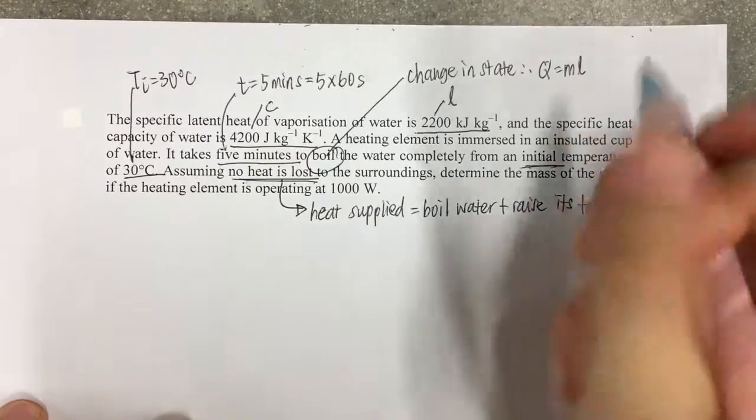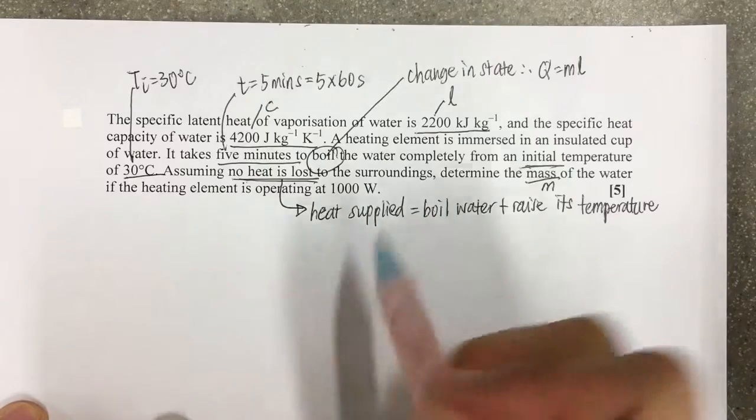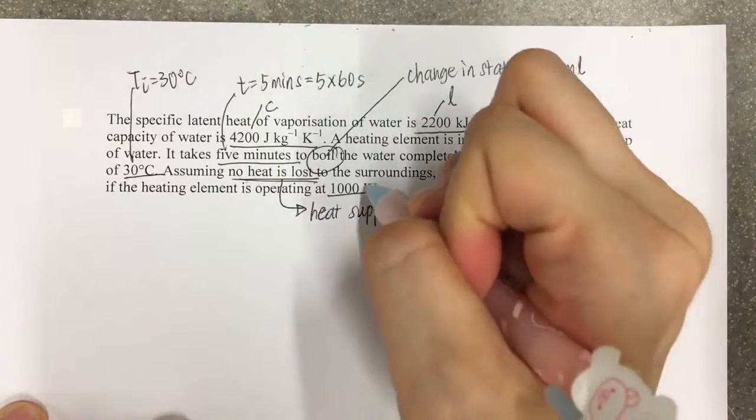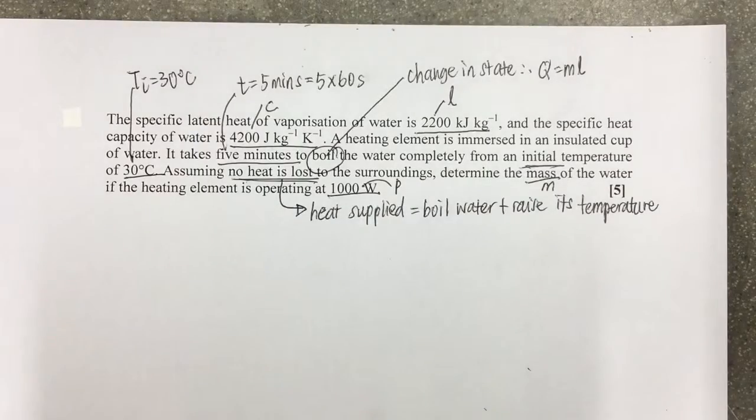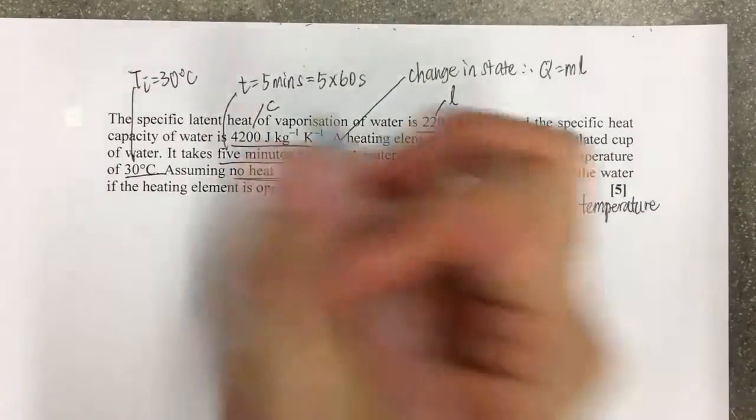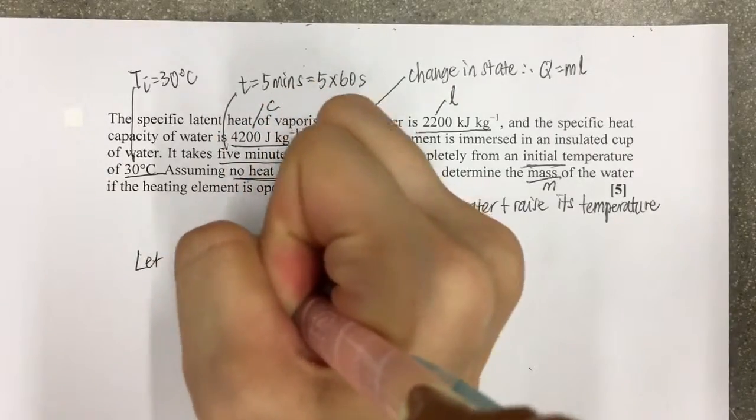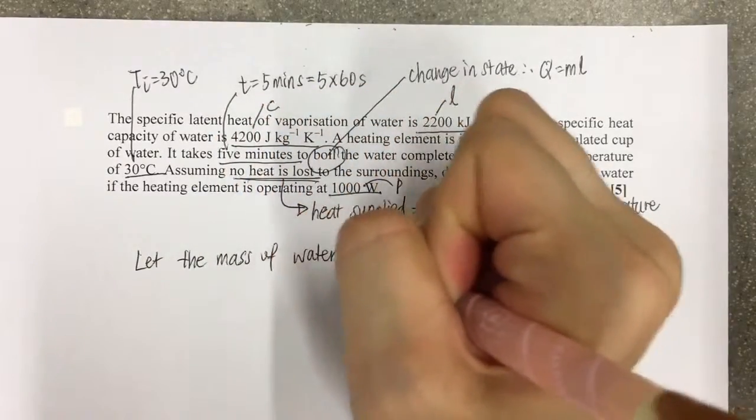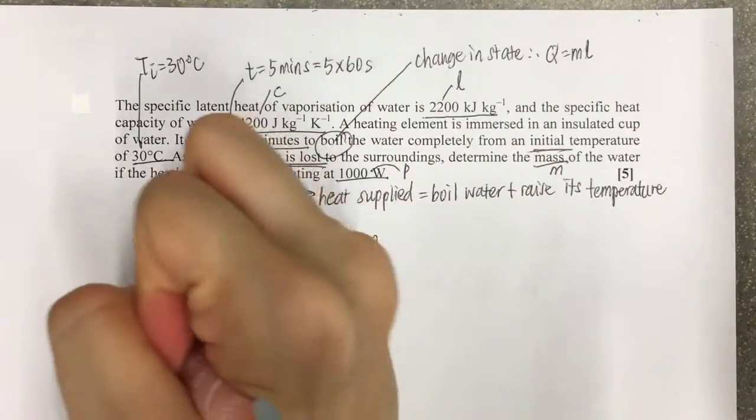Determine the mass of the water when the heating element is operating at 1000 watts, so this is your power P. We start off with this: let the mass of water equal m, so the thermal energy...